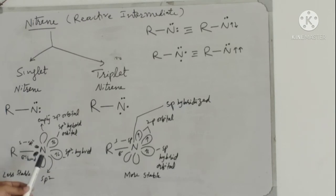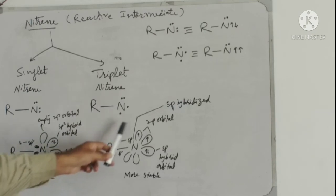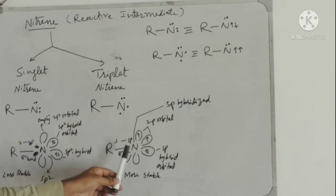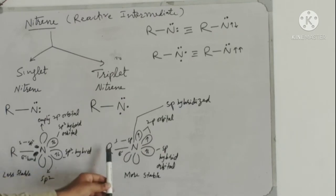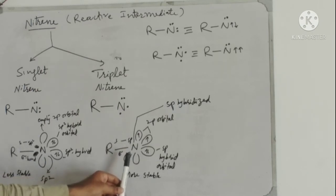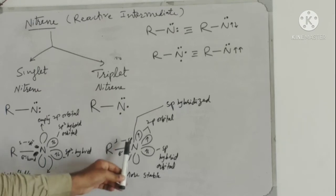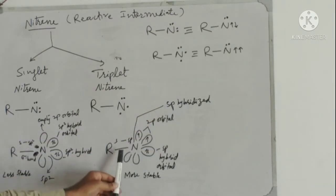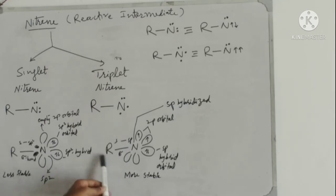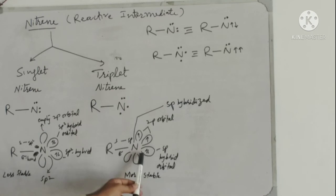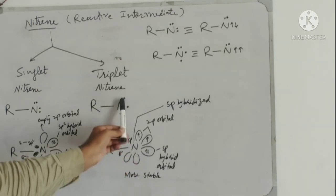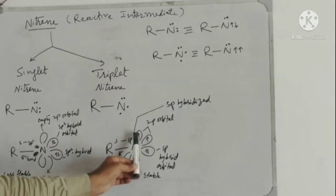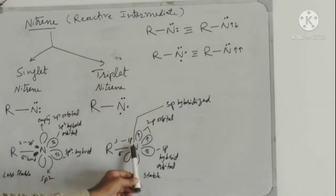In the case of triplet nitrenes, this is the electronic structure. Nitrogen is univalent and forms a single covalent bond with the alkyl group. In the case of triplet nitrenes, nitrogen is sp2 hybridized and will make a sigma bond through the sp2 orbital overlapping with the s orbital of the alkyl group. One sp2 orbital will hold one lone pair, and two unpaired electrons will be present in the two p orbitals on the nitrogen.